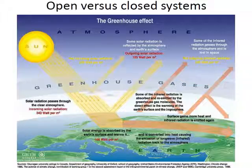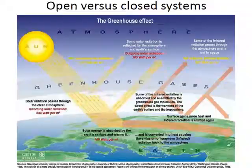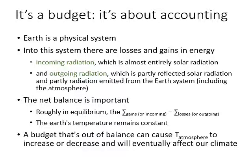The Earth's energy budget is an example of an open system because energy can move in from outside the Earth's surface and it can also leave again. In this image you can see the energy coming in from the Sun that is also being lost back out to space, but while it's inside the Earth system we're interested in how it cycles and what controls how much comes in and goes out. It's a budget — it's all about accounting, just like balancing the money in your wallet.